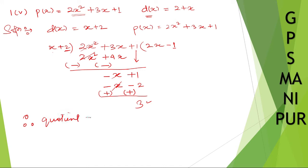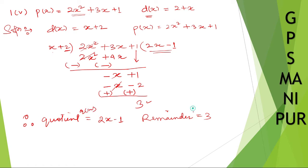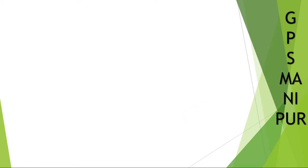Therefore, the quotient q(x) is equal to 2x minus 1, and the remainder r is equal to 3. Now let's proceed to verification.